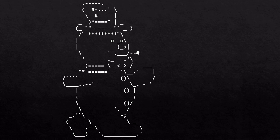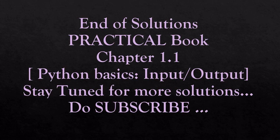There is no complex programming to be done here, and such questions are unlikely to appear in the exam — you can do different kinds of ASCII art just for fun. That covers all the solutions of practical book chapter 1.1, Python basics input output. If there is any doubt, put it in the comment section, stay tuned for more solutions, and do subscribe.